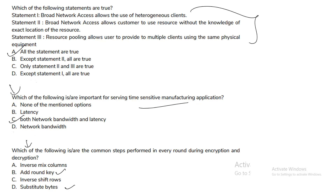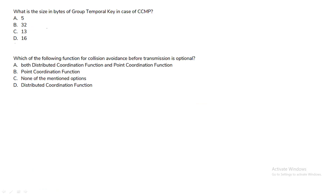What is the size in bytes of the Group Temporal Key in the case of CCMP? The size of the Group Temporal Key in CCMP is 16 bytes.